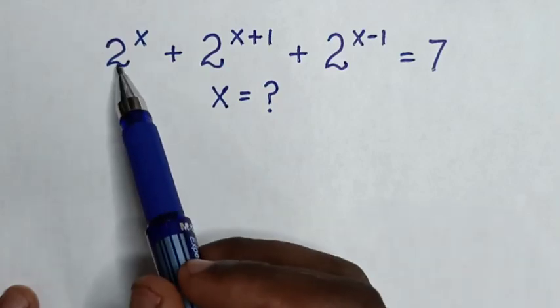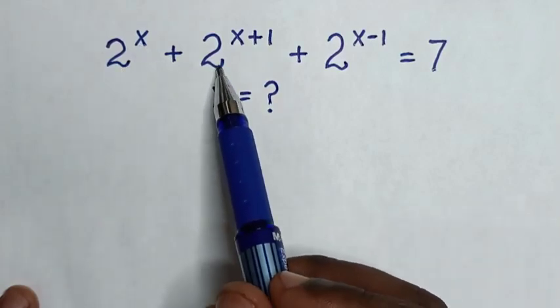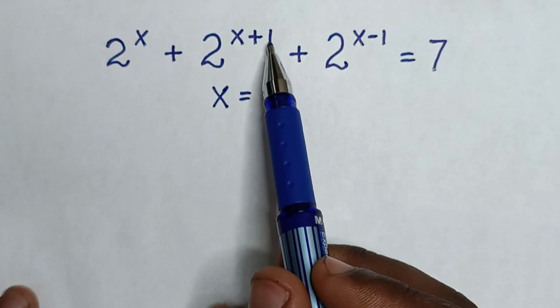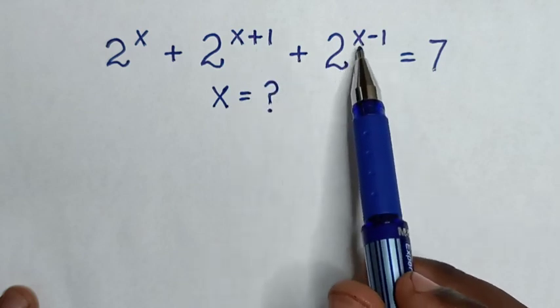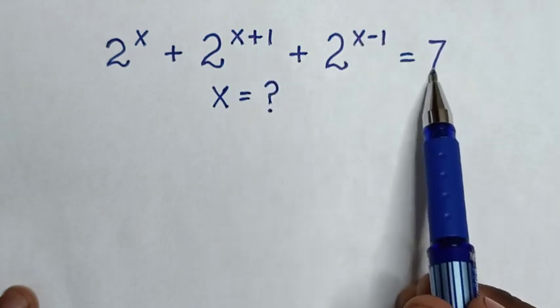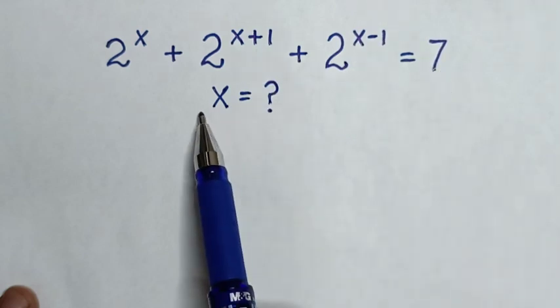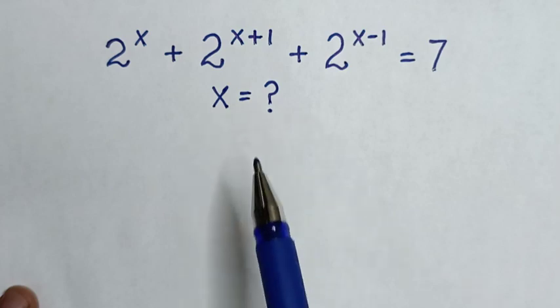Hello! How to solve 2 power of x plus 2 power of x plus 1 plus 2 power of x minus 1 is equal to 7, to find the value of x from this equation.